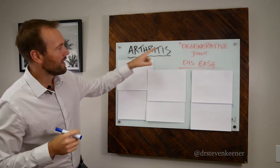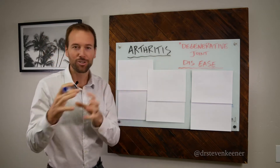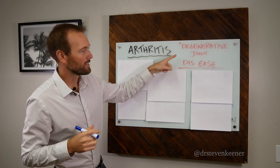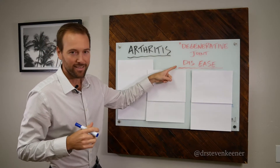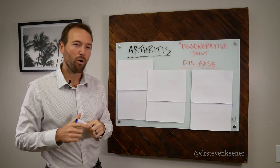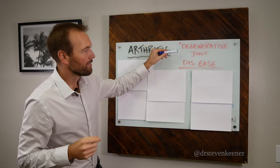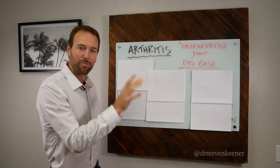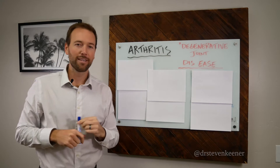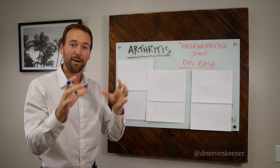Arthritis — the clinical diagnosis term — is actually degenerative joint disease. I want to break down the words a little bit more as we go through the myths and show you why naming it degenerative joint disease actually does very little to explain the process of arthritis.